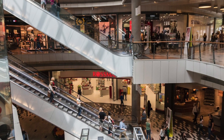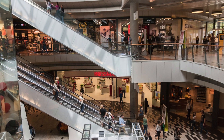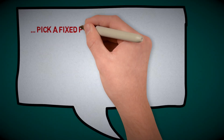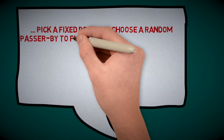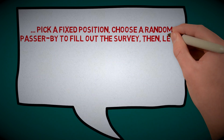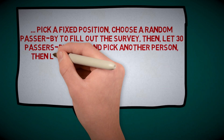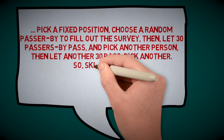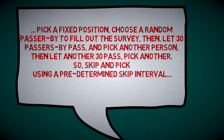What one can do is, instead of just walking around the mall and asking people, one can actually pick a fixed position, choose a random passerby to fill out the survey, and then let, say, 30 passers-by pass and pick another person, then let another 30 pass and pick another — skip, pick, skip, pick — using a predetermined skip interval.